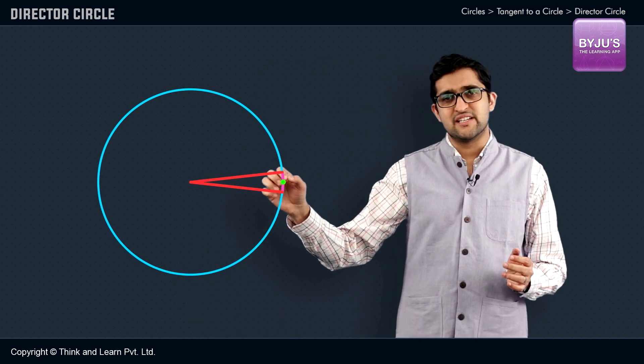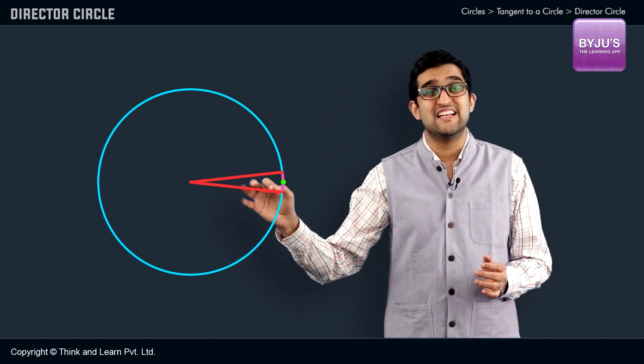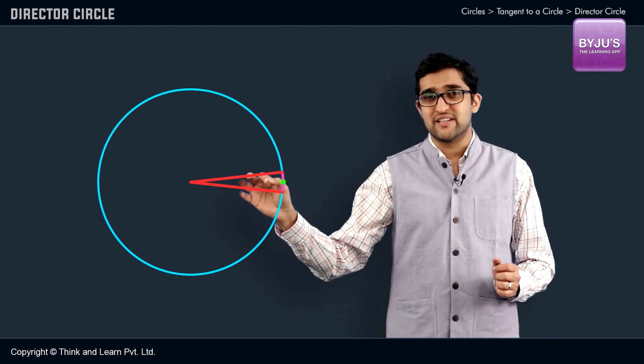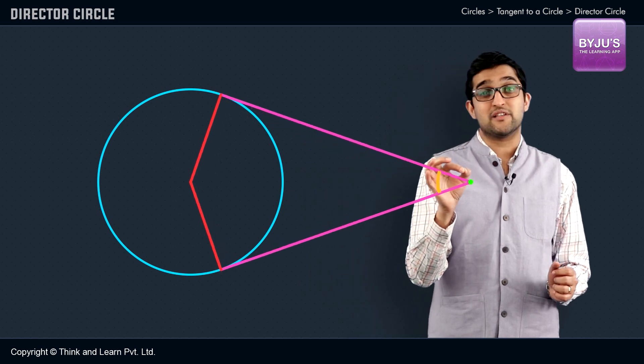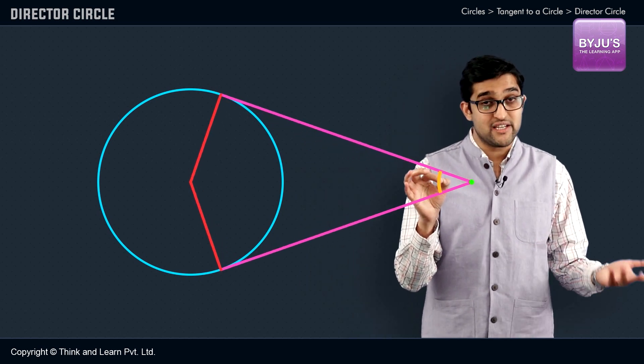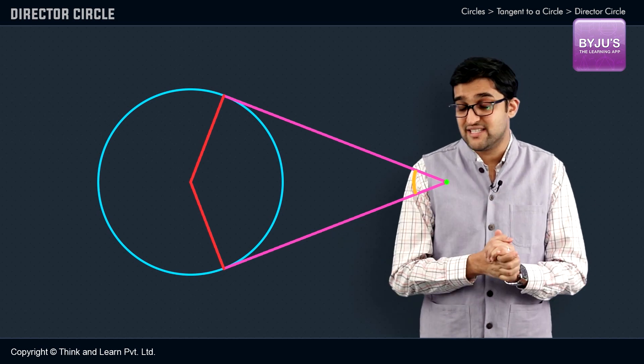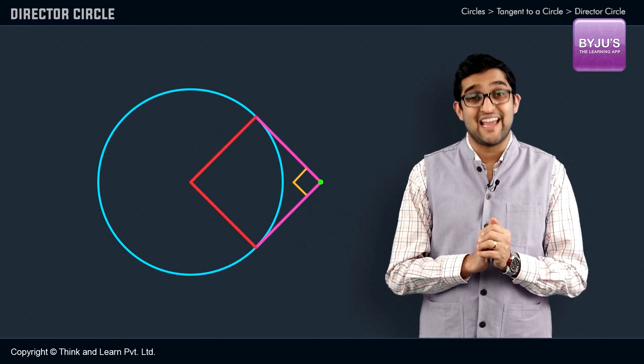When the point of intersection is very close to the circle, the angle would be close to 180 degrees, and when the point of intersection goes farther from the circle, the angle decreases. But at a particular point, the intersection angle made by the tangents would be equal to 90 degrees.